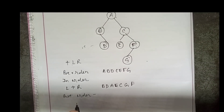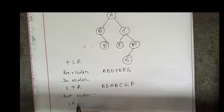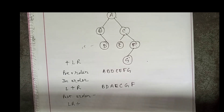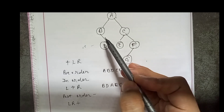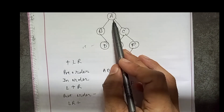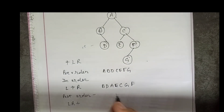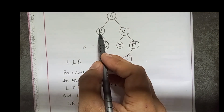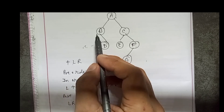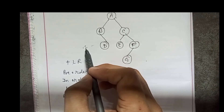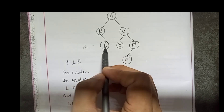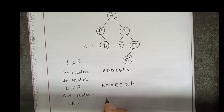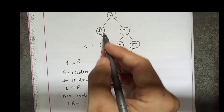Now we will see post-order traversal. In post-order, first left, then right, and at last the root is visited. So: left, right, root. Going first to the left — does B have a left child? No. So: left is nothing, no right child either, then write the root — B.